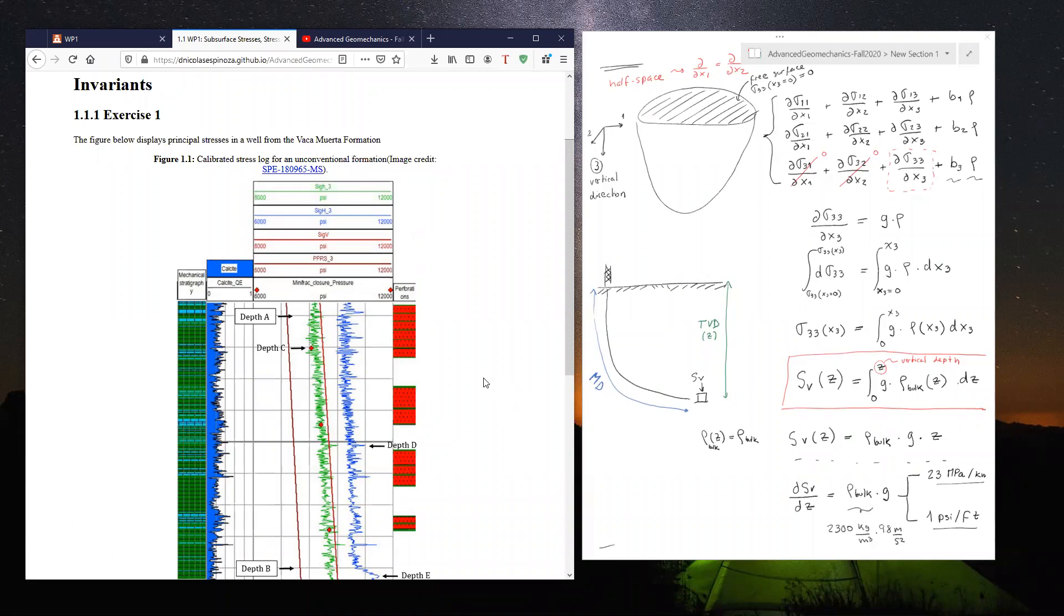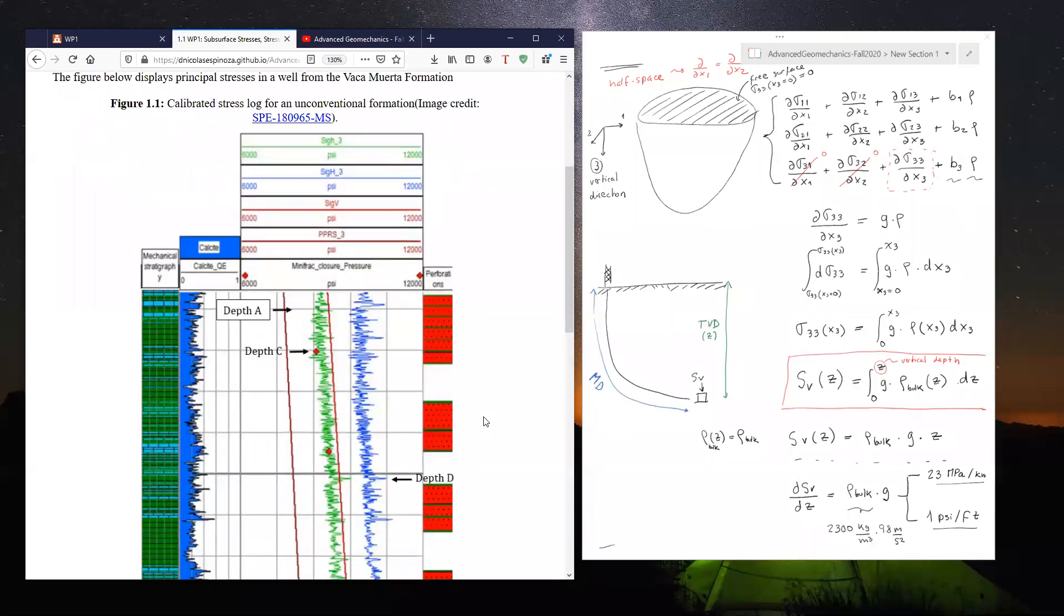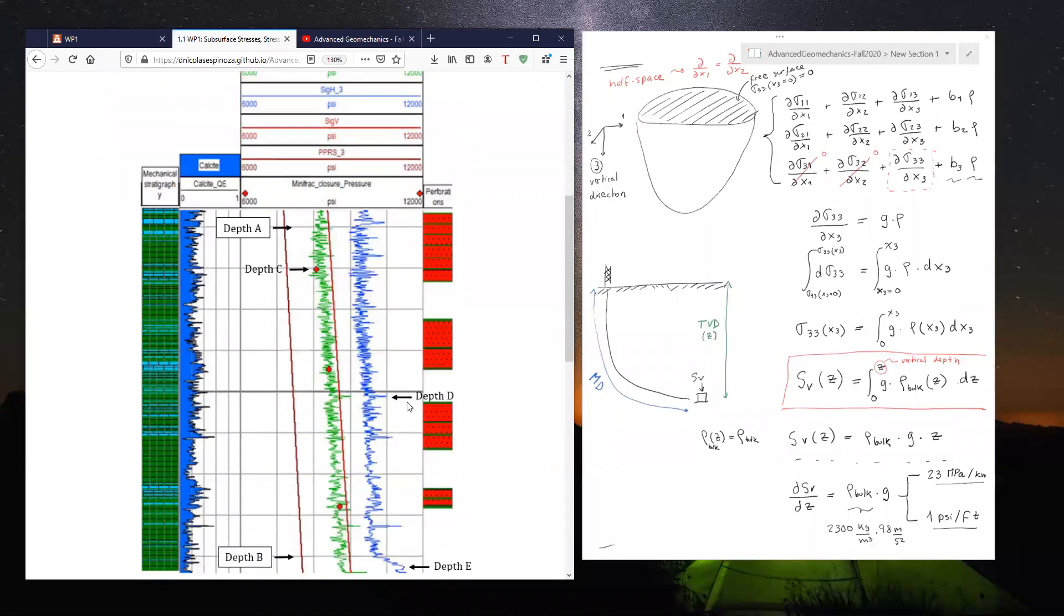is called the Vaca Muerta Formation. This is a nice example because it has a particularity that one of the horizontal stresses, and sometimes both of them, are higher than the vertical stress.